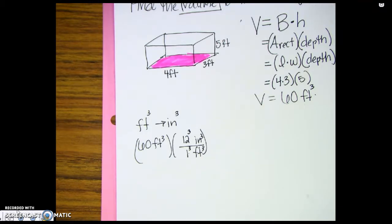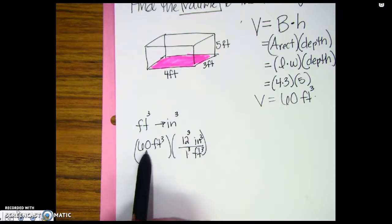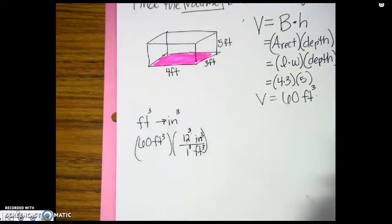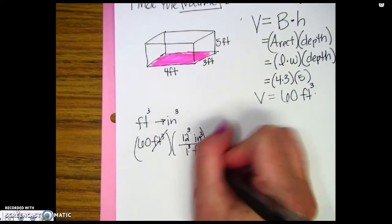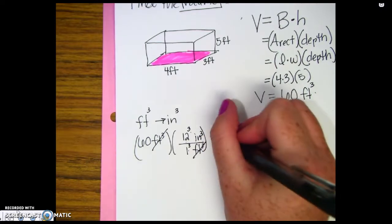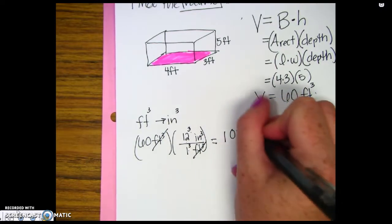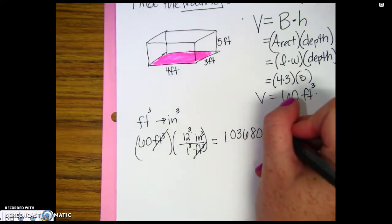So in my calculator, I'm going to multiply 60 times 12 to the third. So cubic feet over cubic feet, what I'm going to be left with is looks like 103,680 cubic inches.